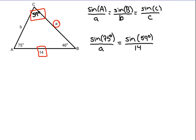You see we have this equation now. We have a proportion here, and we only have one unknown, so we should be able to solve for it. Easiest way to solve for A here is let's go ahead and cross multiply. So we will have A times the sine of 59 degrees is equal to 14 times the sine of 75 degrees.